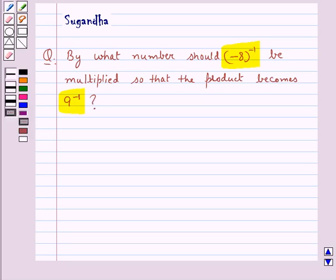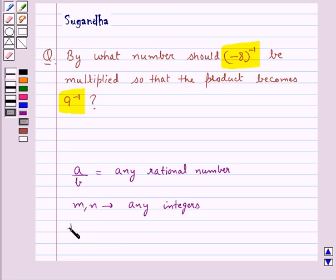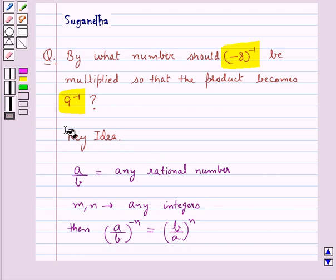Before proceeding with the solution, let us discuss the key idea to be used for this question. We have a/b be any rational number and m, n be any integers. Then (a/b)^(-n) = (b/a)^n. This is the key idea to be used in this question.